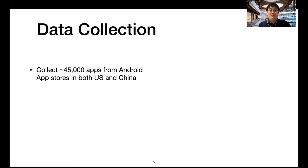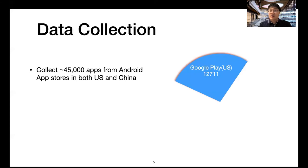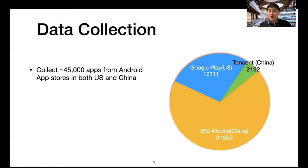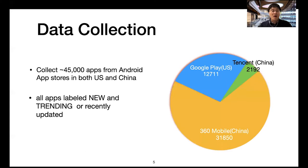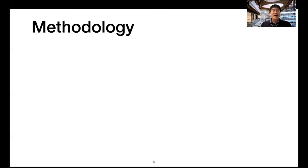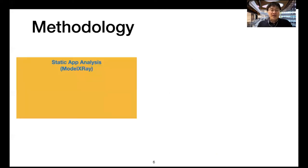We collected more than 45,000 apps from Android stores in both the US and China, including Google Play, Tencent, and 360 Mobile. All apps labeled new and trending or recently updated were collected because they have a higher chance of using machine learning technology. We built a static app analysis tool called ModelX3 to analyze whether an app uses on-device machine learning or not.